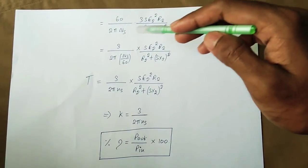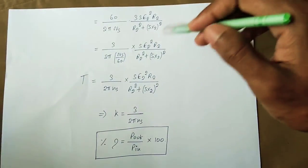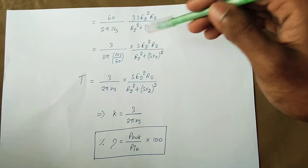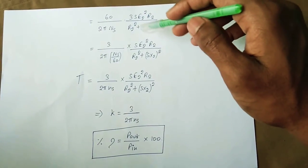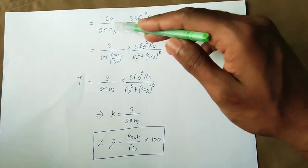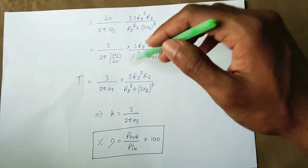After simplification, we get 3 divided by 2π·Ns as the constant, confirming the value of k.